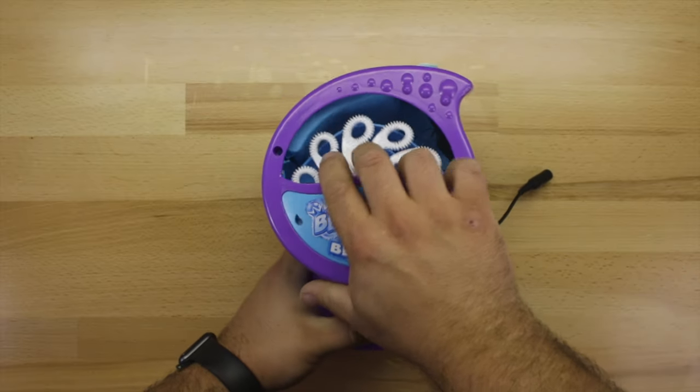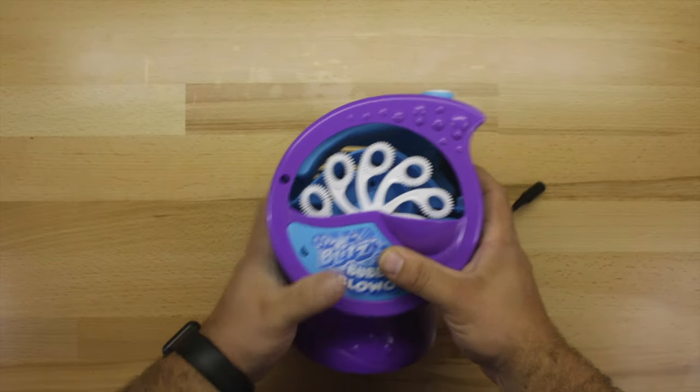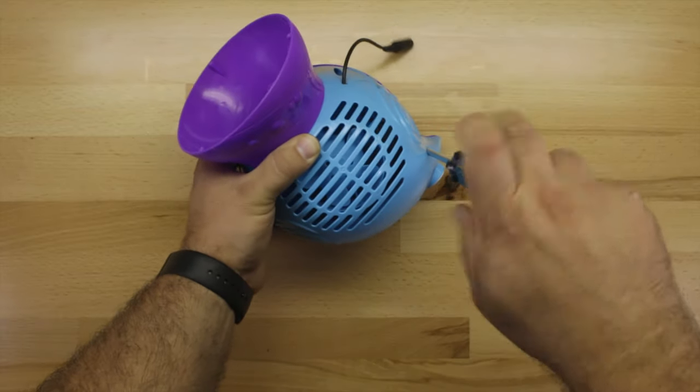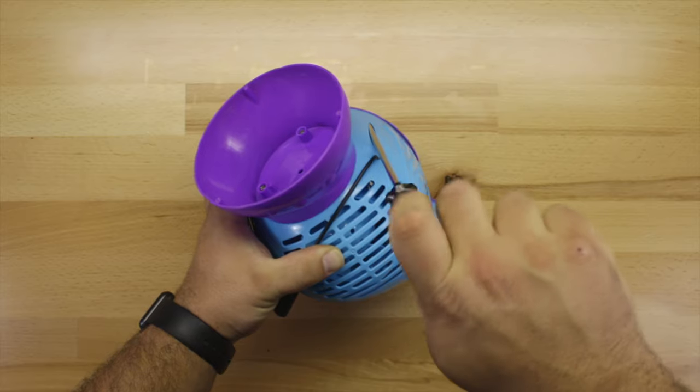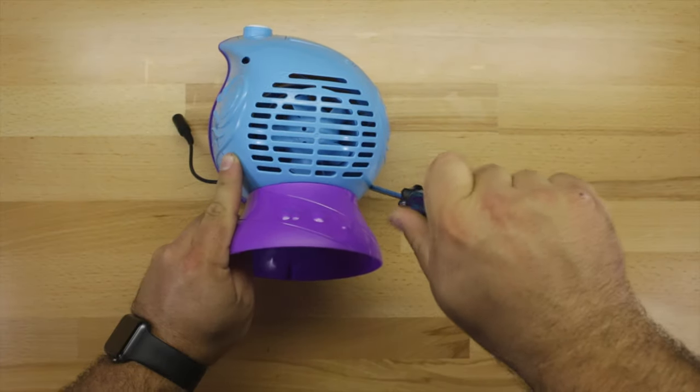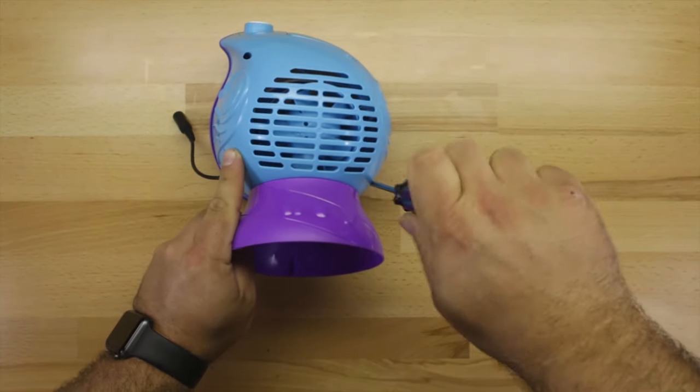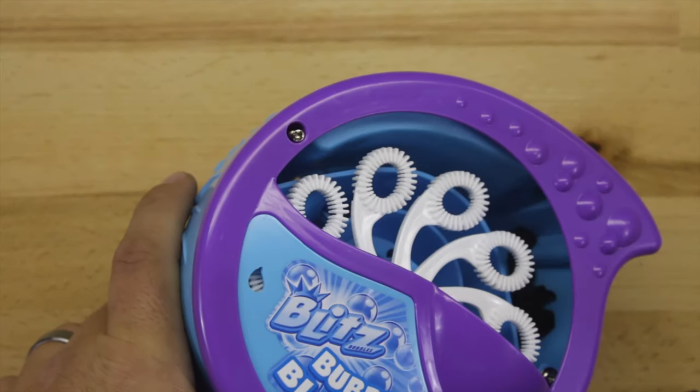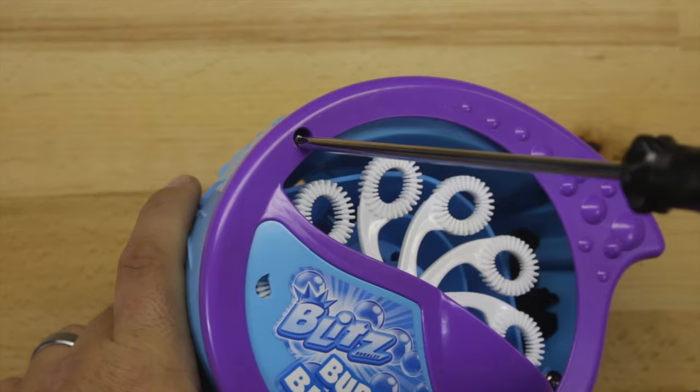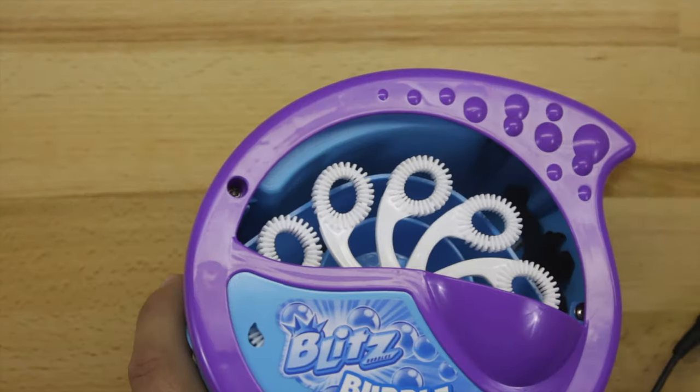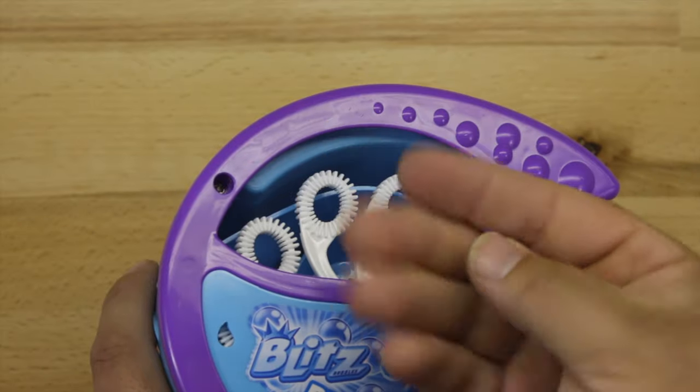If everything works well, go ahead and reinstall the front plate and secure with the three screws in the back, and the one screw in the front hidden compartment. And don't forget to reinstall the plug.